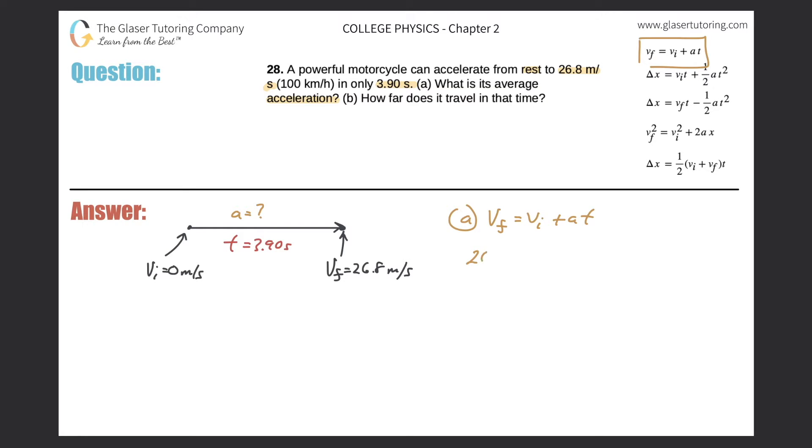So the final velocity here is 26.8. I'm going to leave out the units because I know that they're all consistent, meaning I have meters and meters and seconds and seconds. So I can just plug it all in. So the initial velocity here was 0. The acceleration is what I'm looking for and my time value is now 3.90.